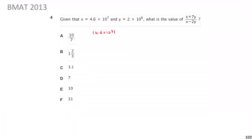Let's go through this. The numerator is x + 7y, which is 4.6 × 10⁷ plus 7y. Multiplying 2 × 10⁶ by 7 gives 14 × 10⁶. So the numerator is 4.6 × 10⁷ + 14 × 10⁶. The denominator is 4.6 × 10⁷ minus 2 times 2 × 10⁶, which is 4 × 10⁶.